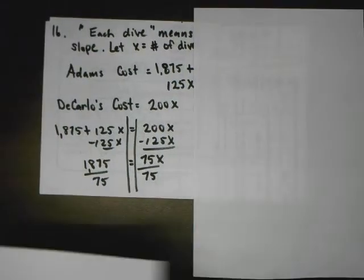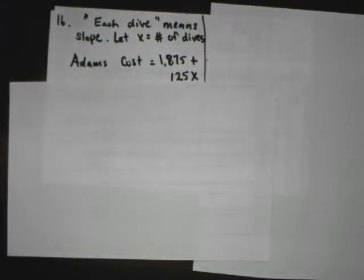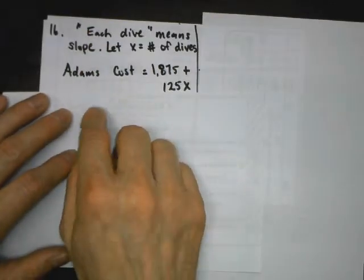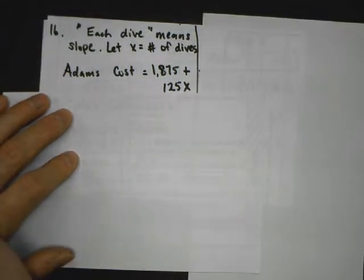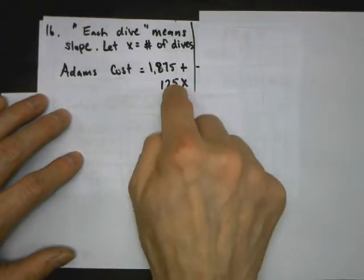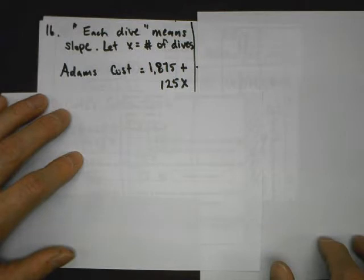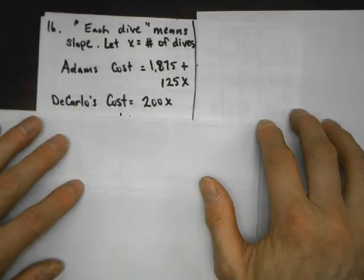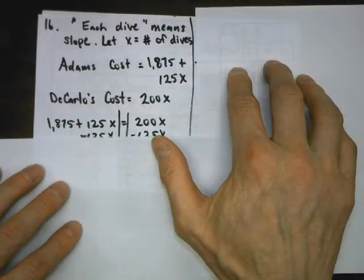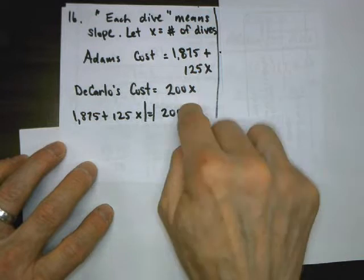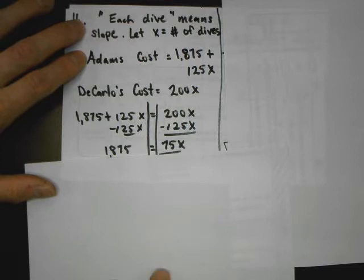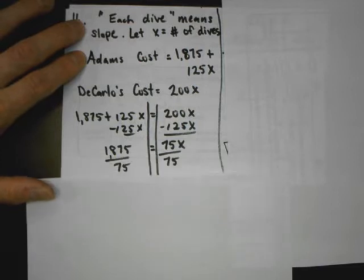Number 16 involves skydiving. The word 'each' tells you it's a slope. x equals the number of dives. Adam's cost is a fixed fee plus $125 per dive, so that's $125x. DeCarlos has no initiation fee but charges $200 per dive. When they're the same, I set the two expressions equal to each other, get my x's on the same side, isolate the variable, and find they'll be equal after 25 dives.